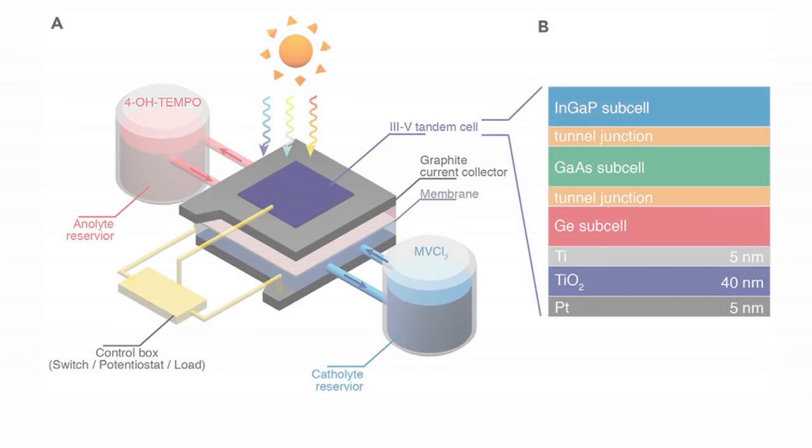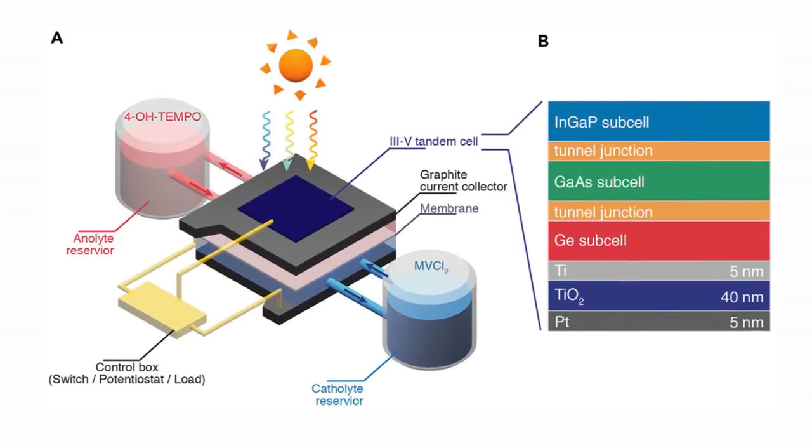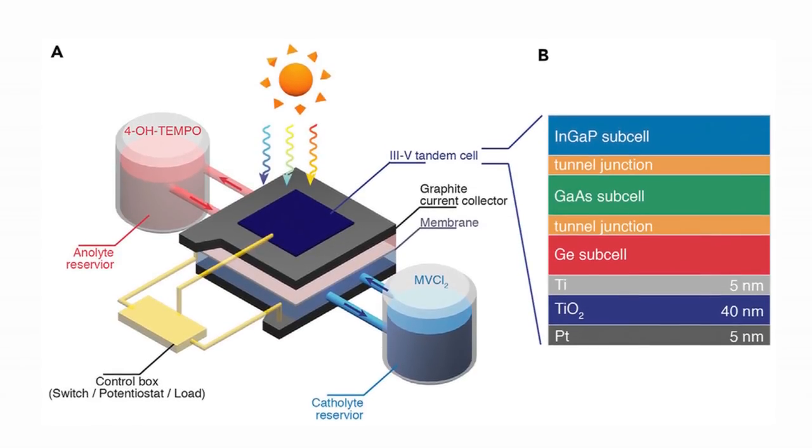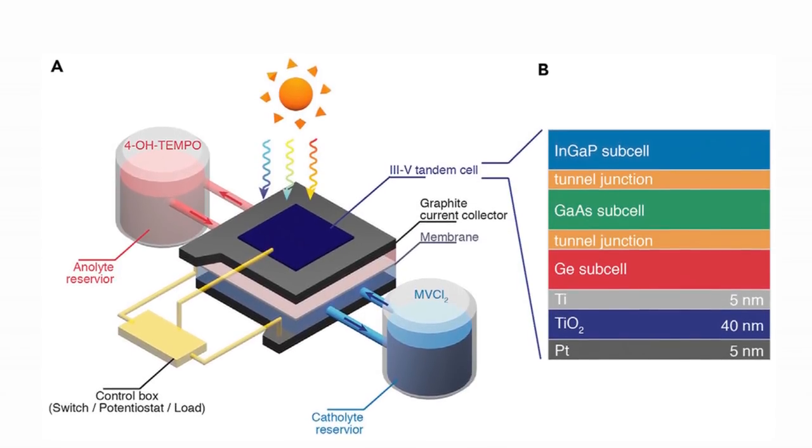In the batteries, the photo-assisted charging process occurs when the sunlight illuminates the dye molecules, causing them to become photo-excited and inject their electrons into the photo electrode.